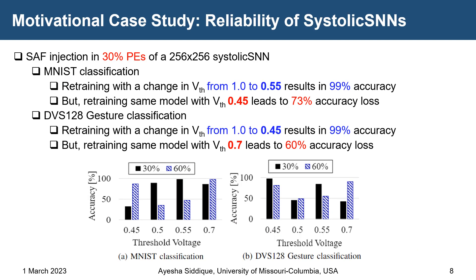We carried out a motivation case study to investigate the impact of stuck-at faults injected in 30% of processing elements across a 256x256 systolic array. For MNIST, retraining the systolic SNN with VTH changed from 1.0 to 0.55 yields 99% accuracy, but changing VTH to 0.45 causes 73% accuracy loss. For DVS gesture, retraining with VTH changed from 1.0 to 0.45 yields 99% accuracy, but changing VTH to 0.7 results in 60% accuracy loss.